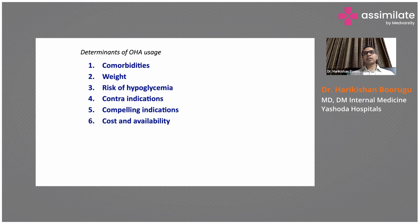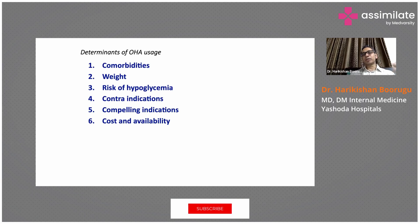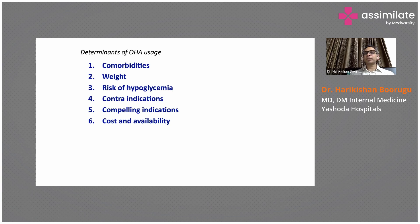We start a drug and slowly uptitrate the dosage. If the patient is tolerating the drug, we increase the dose. If sugars are not reaching the target range, we add a second drug. Once the patient is on two to three drugs at optimal dosages and sugars are still not under control, that is the time to consider adding insulin.